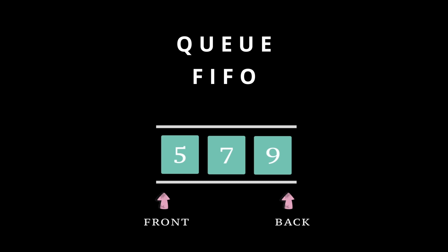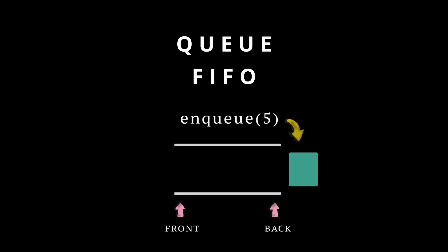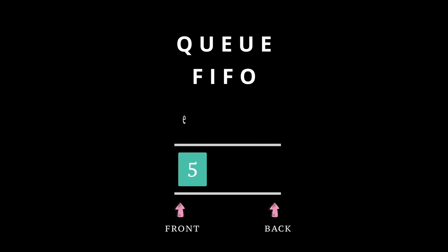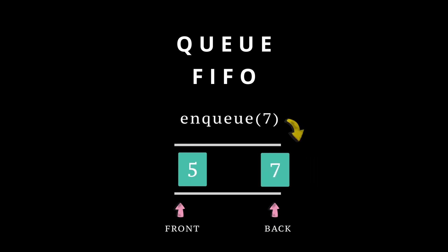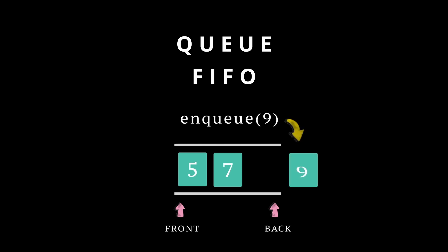Adding a new element is called enqueue, which takes a value as input. So let's say we want to add the number 5 — then we call the enqueue(5) function. Similarly, if we want to add number 7, then we call enqueue(7). And lastly, we call enqueue(9) to insert number 9 into our queue.